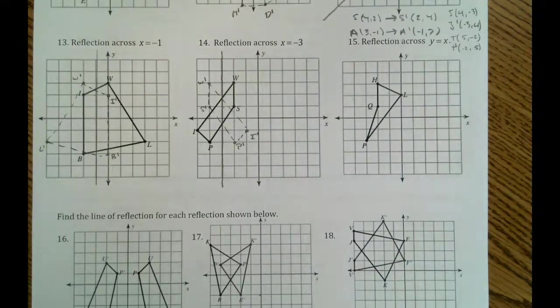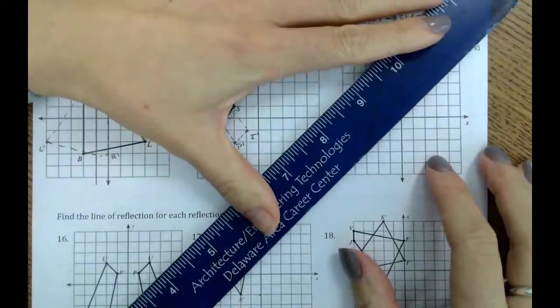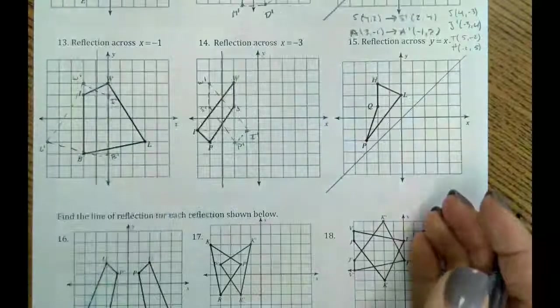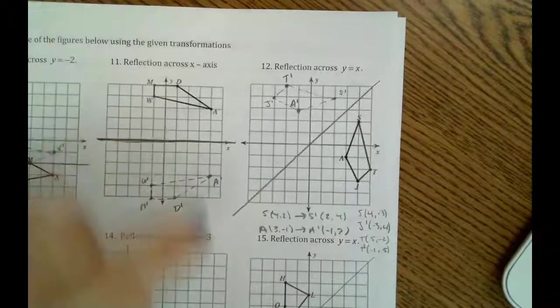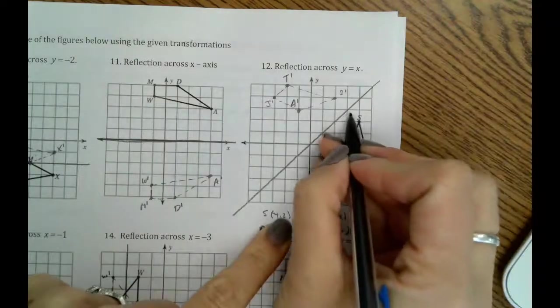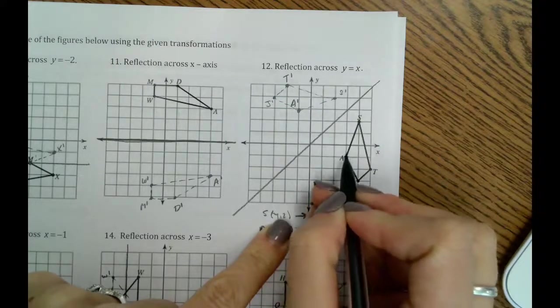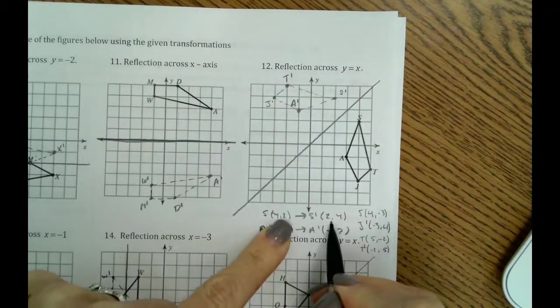And then here, we're going to reflect over the line y equals x again. So if you watched the video from number 12 up here, we talked about how the point s, we can easily count diagonally. However, points like a, that's really hard to count diagonally. So if we look at s, all we have to see is that we flip our x and our y. So we're going to try that here.